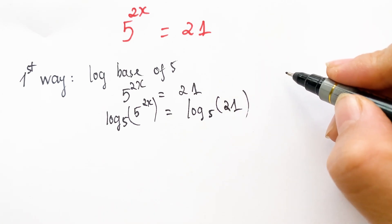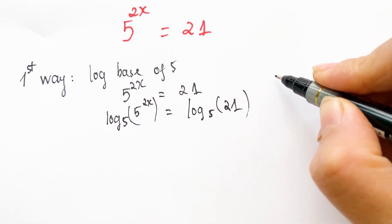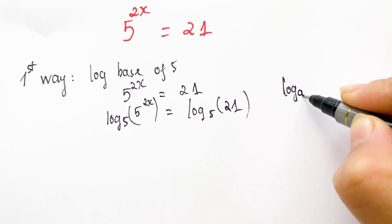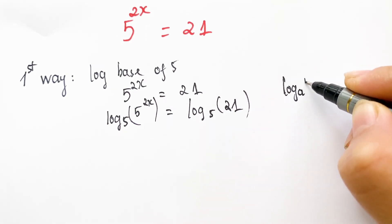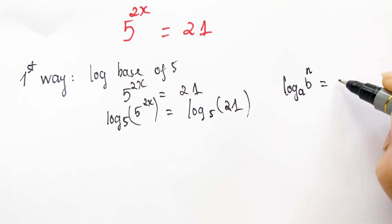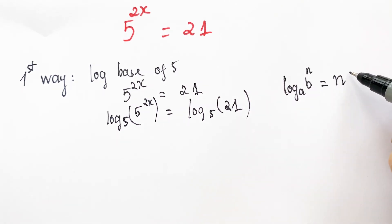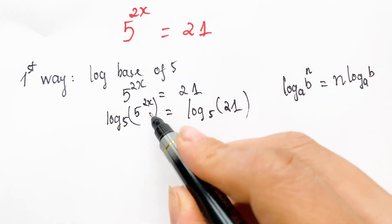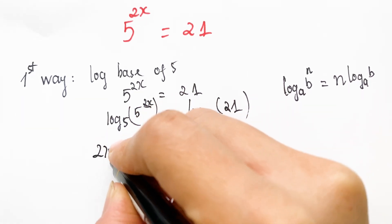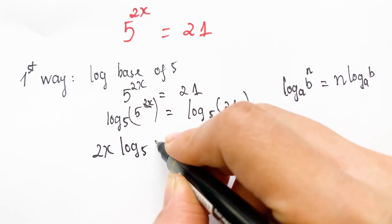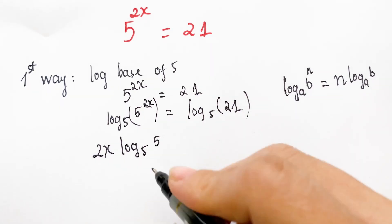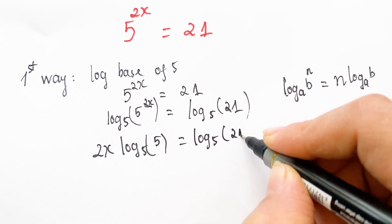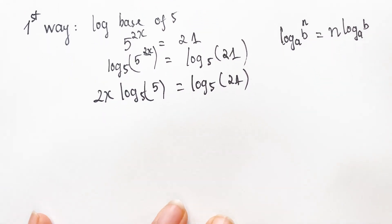Look at the logarithm property here: log base a of b to the power n is equal to n times log base a of b. So therefore, we have 2x times log base 5 of 5, which is equal to log base 5 of 21.